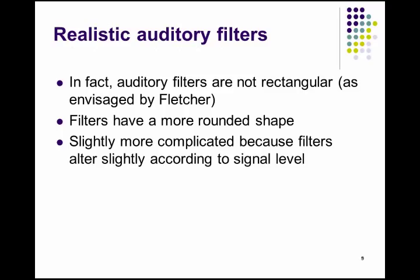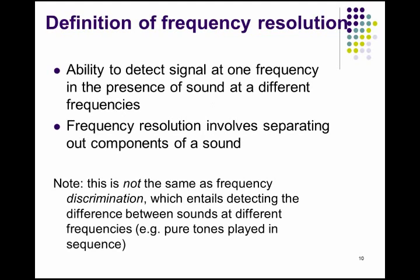In reality, what we did is we assumed our filter is rectangular because we didn't account for amplitude, but obviously amplitude does play a role. Louder sounds have higher masking than quieter sounds, and the whole thing is nonlinear. So we have to investigate how realistic auditory filter shapes look. They're slightly more complicated than a rectangular bandwidth. This is what this lecture is about — measuring realistic auditory filter shapes using frequency resolution, defined as the ability to detect a signal at one frequency in the presence of a sound at a different frequency.